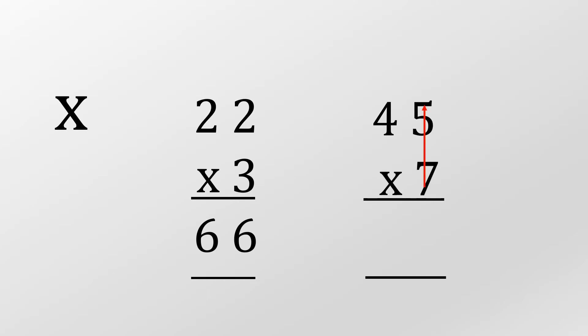Here we go. Seven times five, thirty-five. Put the five down, carry the three. Seven times four, twenty-eight, and we add that three gives us thirty-one.